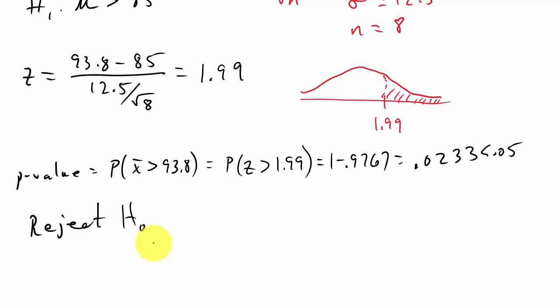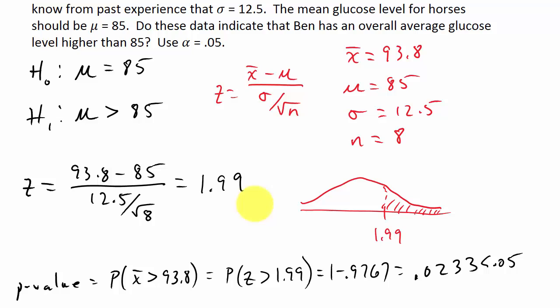And so it seems that, based on this, it seems that Ben the horse's average glucose level is higher than the average. Because we reject H0, we reject this mu equals 85. So that means yes, his glucose level seems to be higher.